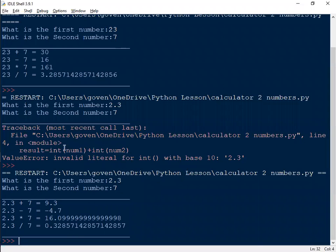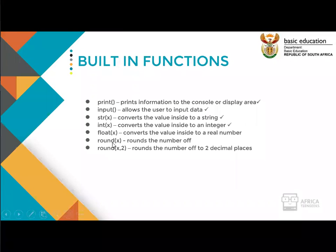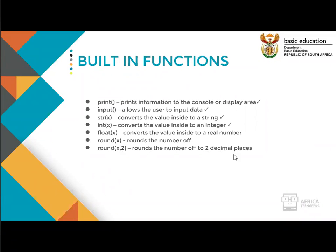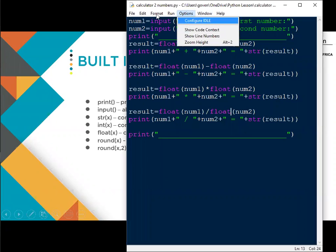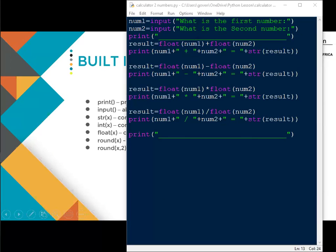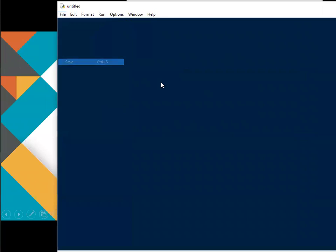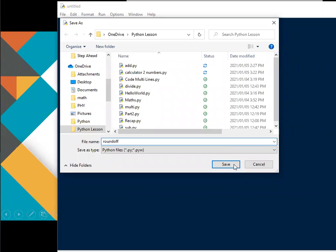Next is the round function. The round function allows us to round off a number to either an integer value, or by adding one extra parameter, to a specified number of decimal places. I'll show you using an example. I'm going to start a new Python shell, create a new file, and save it as 'round off.' So let me type out a simple program with number1 equal to 34 and number2 equal to 7, then print number1 divided by number2.